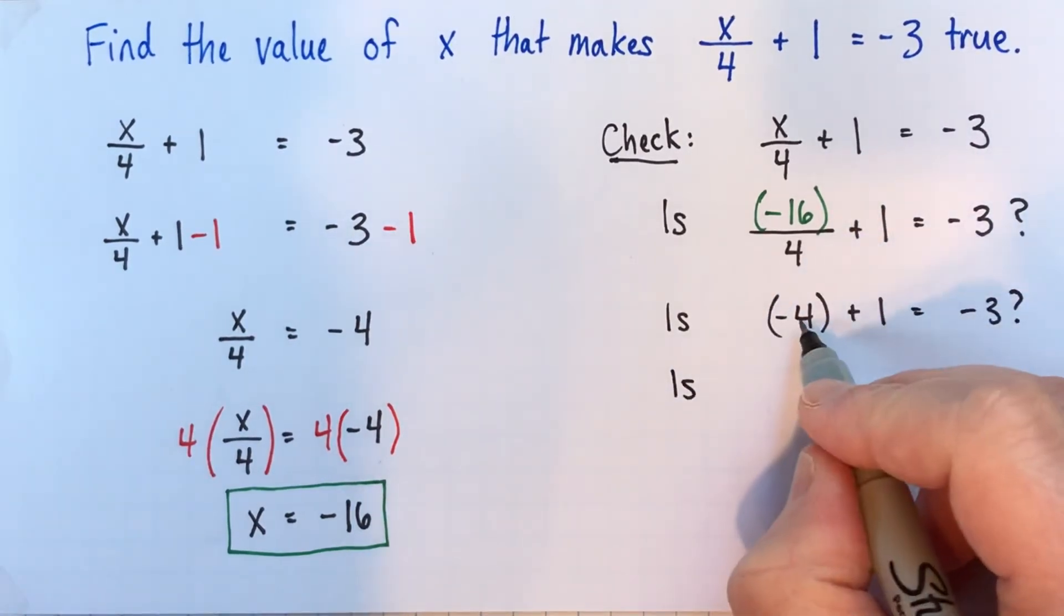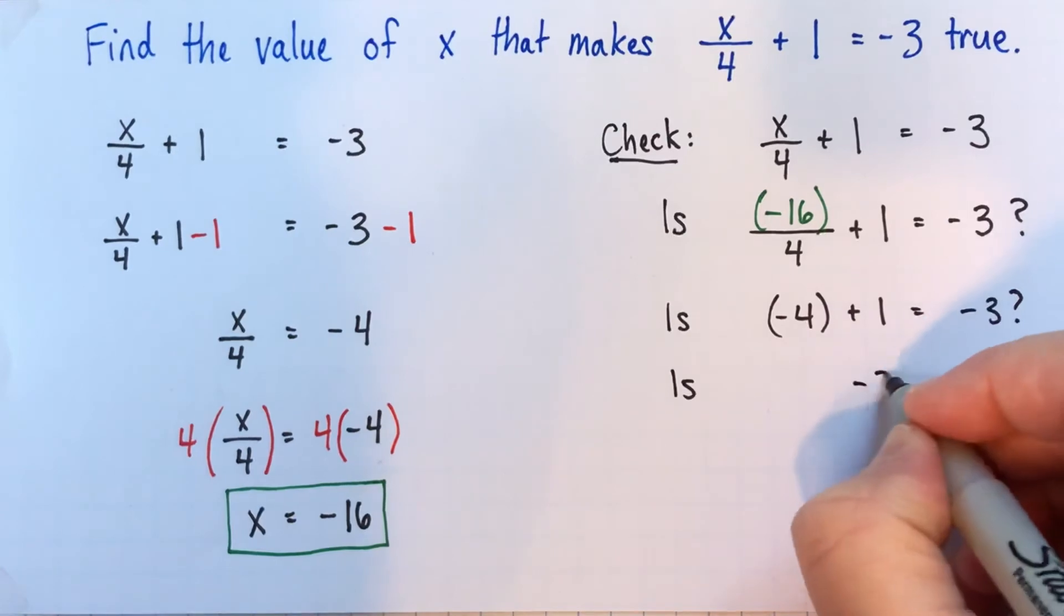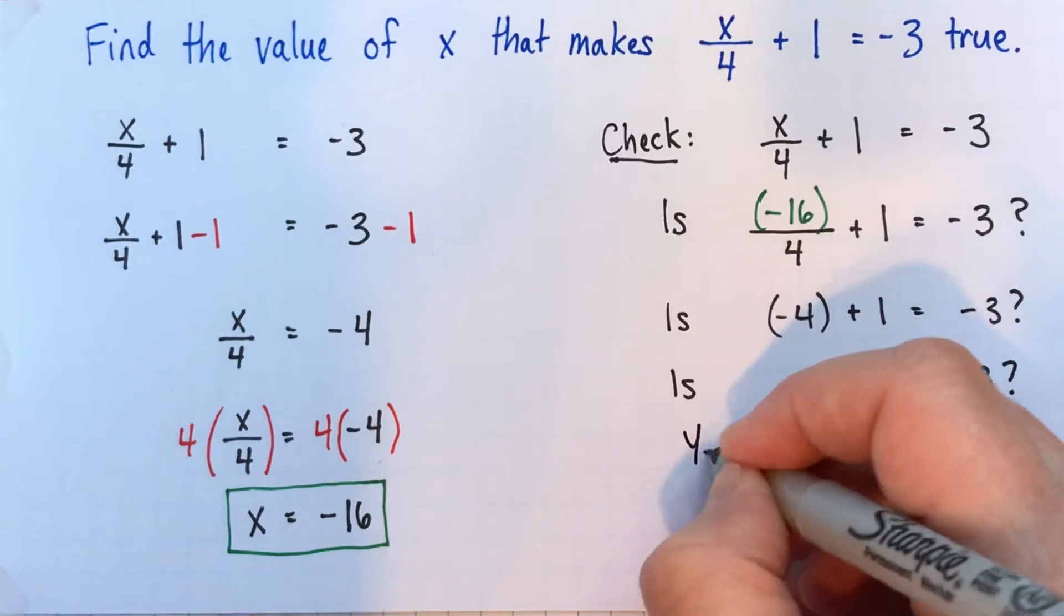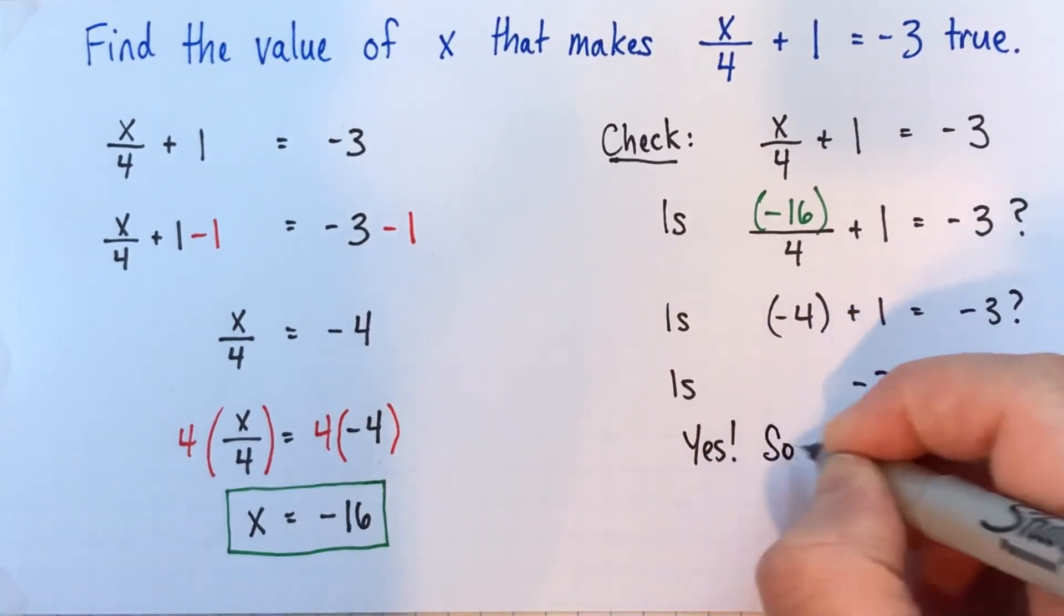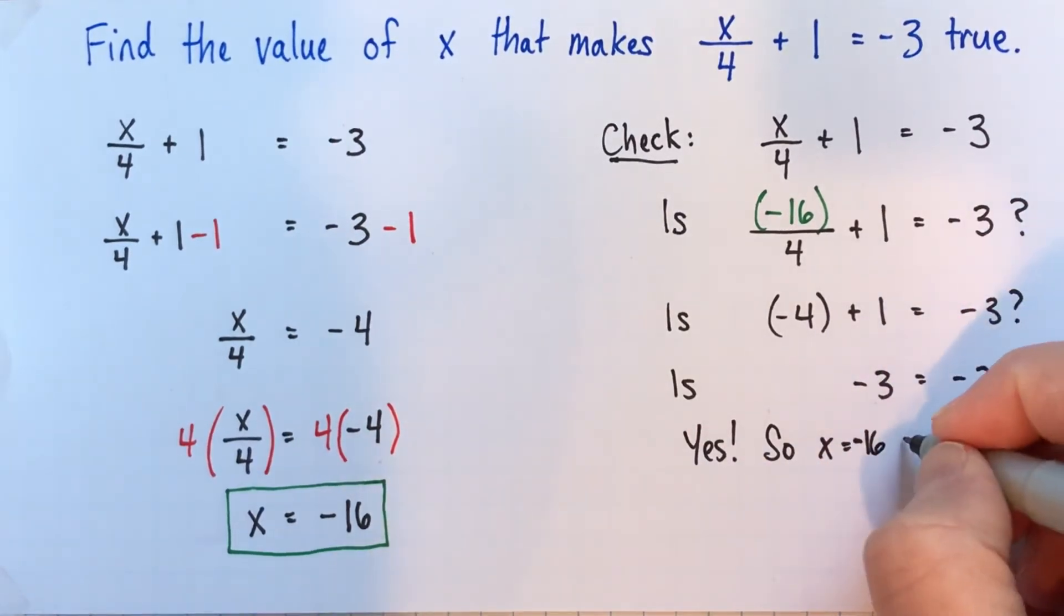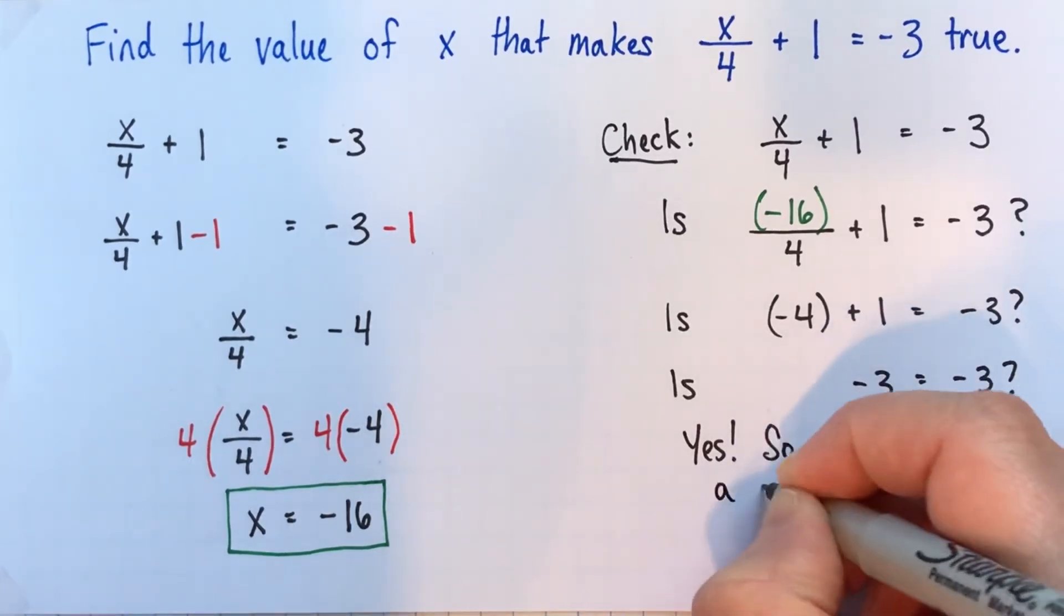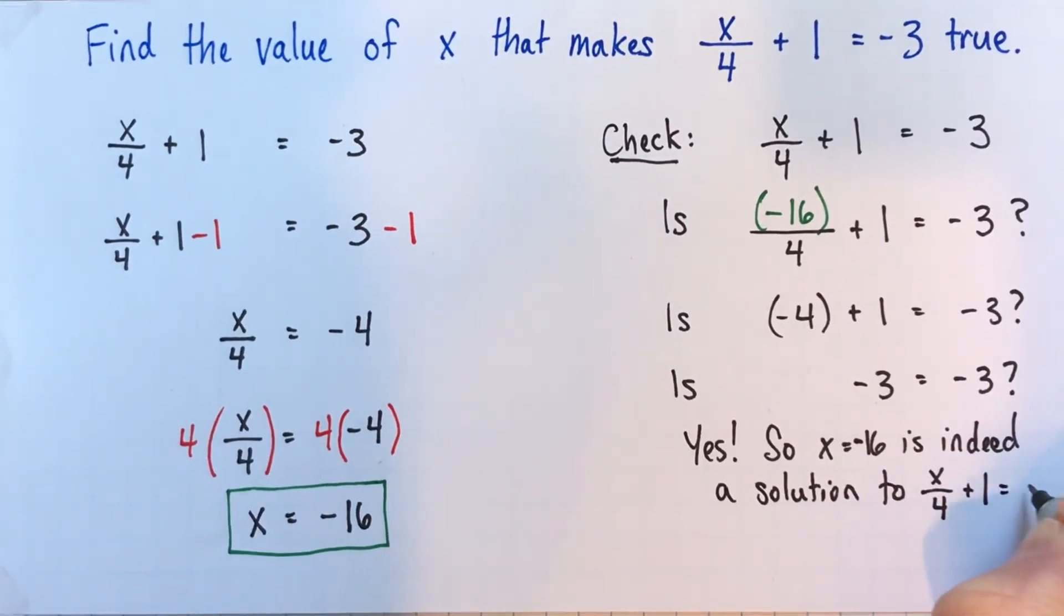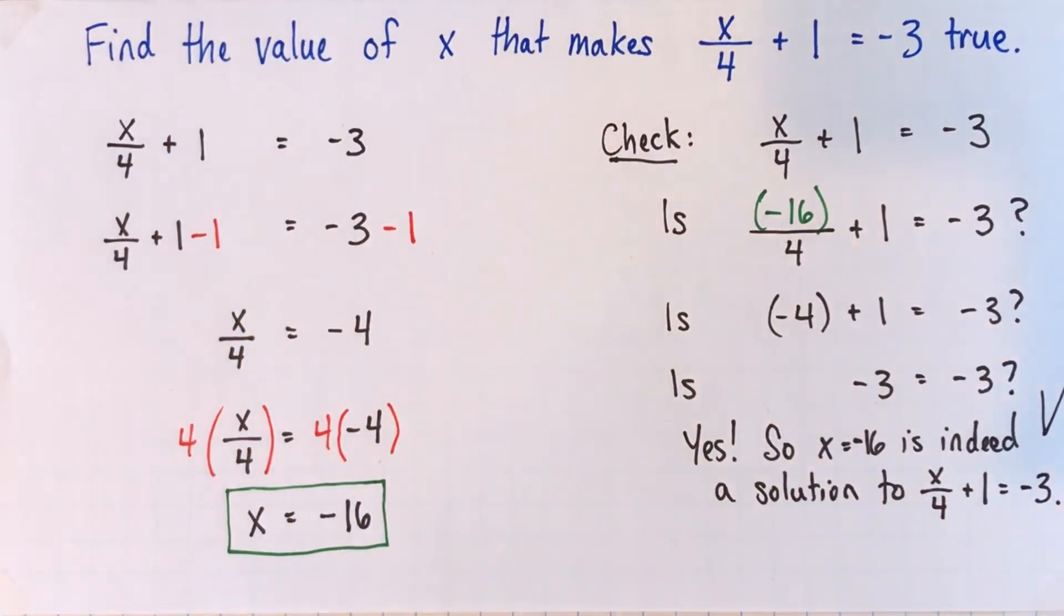And then, negative 4 plus 1, yeah, that's negative 3. So is negative 3 equal to negative 3? Yes, of course. So what that tells us is that x equals negative 16 is indeed a solution to this equation here. x divided by 4 plus 1 equals negative 3. Alright, good luck with it.